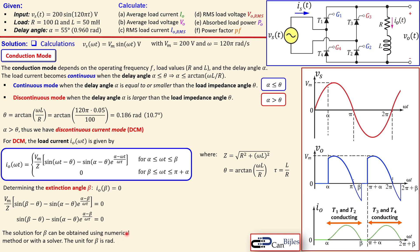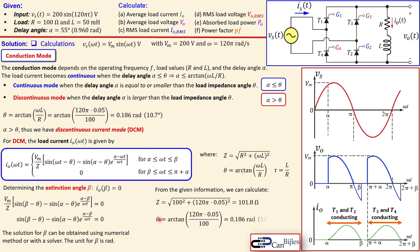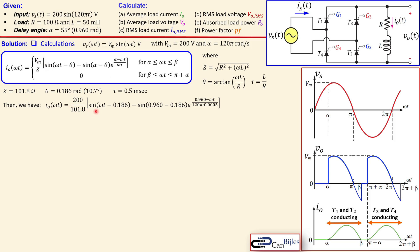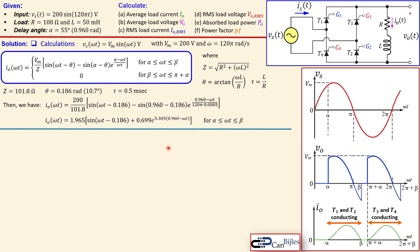From the given values, Z = 101.8 ohms, θ = 0.186 radians, and τ = L/R = 0.05/100 = 0.5 milliseconds. Substituting everything — 200 V, 101.8 ohms, etc. — into the current expression and simplifying gives a clean expression valid between α and β.